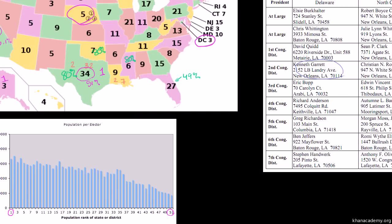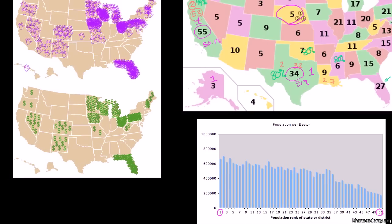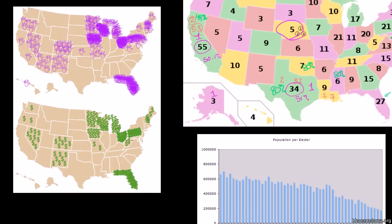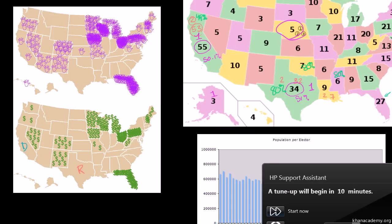What makes it even more skewed is that because it's winner-take-all and candidates want to spend their time and money most efficiently, it creates a scenario where candidates ignore huge parts of the population — because those populations are unlikely to swing one way or the other. California is very reliably Democratic and Texas is very reliably Republican. This graph shows where George W. Bush and John Kerry spent the last five weeks of the 2004 election.